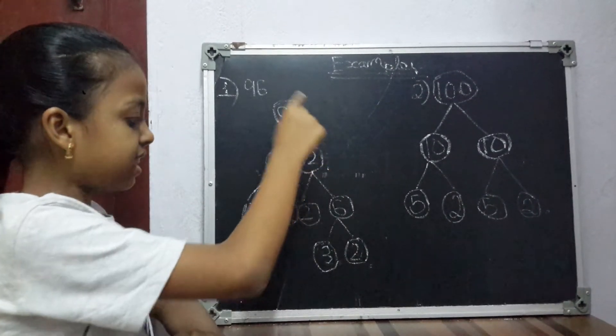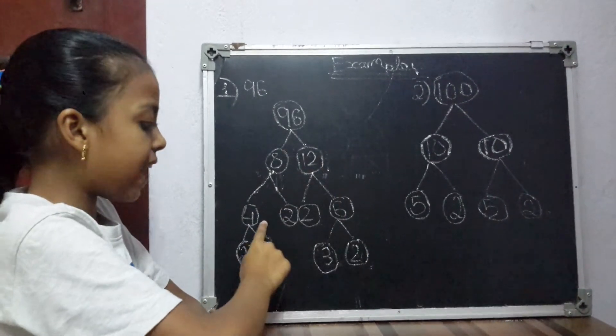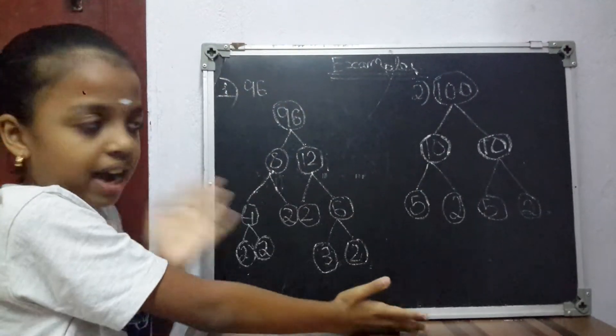8 twelves are 96. 4 twos are 8. 2 sixes are 12. 2 twos are 4. 3 twos are 6. This is how we say a factor tree.